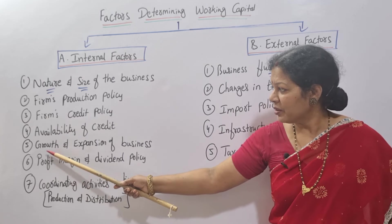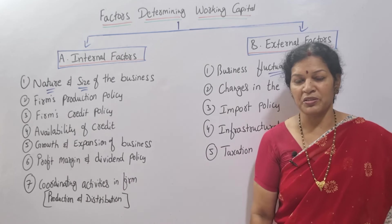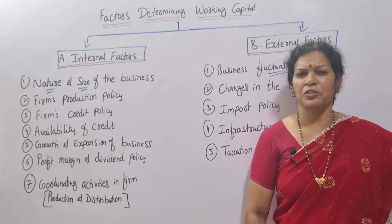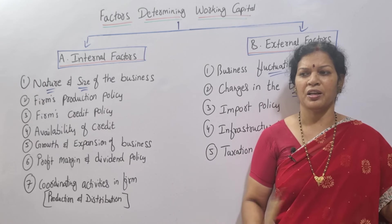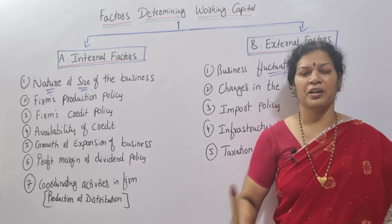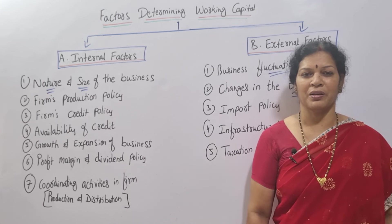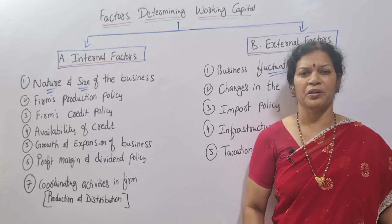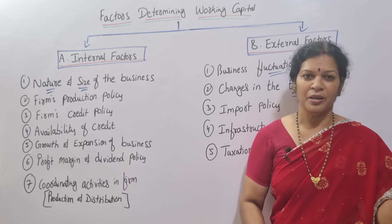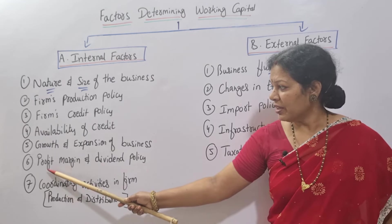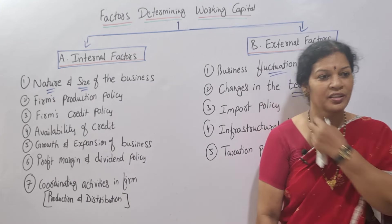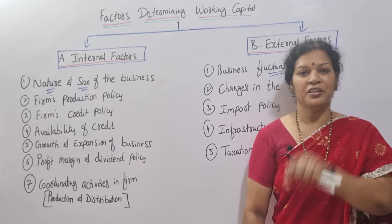The next factor is the growth and expansion of the business. Companies that are growing open many new branches, which means they need more working capital. Related to this is the profit margin and dividend policy of the firm.